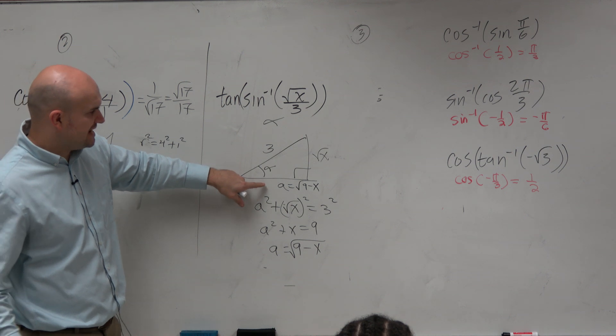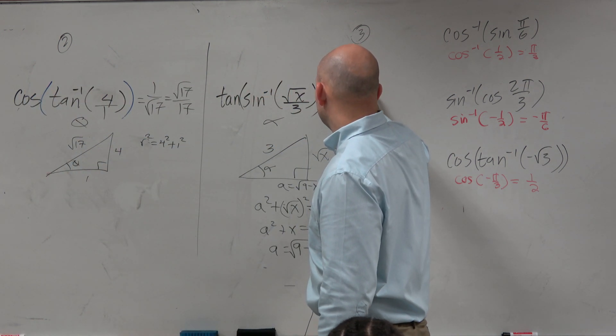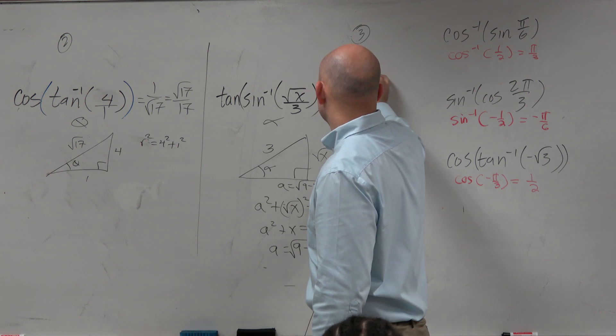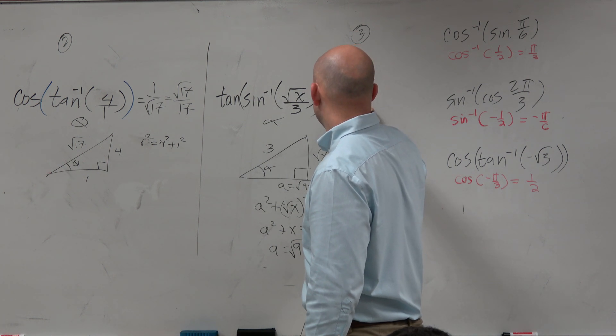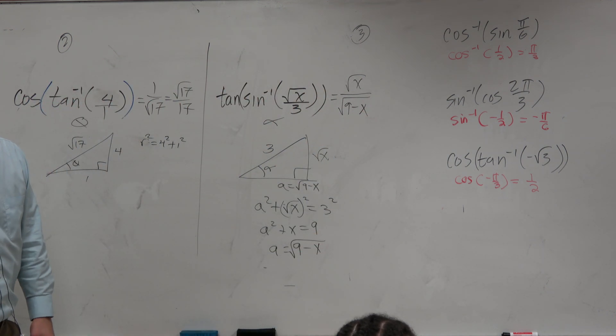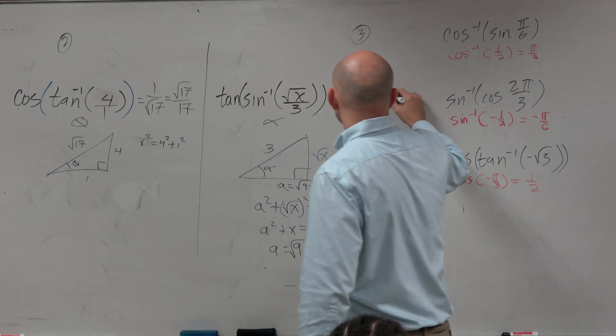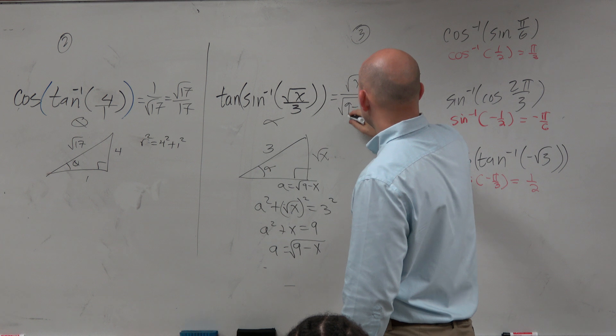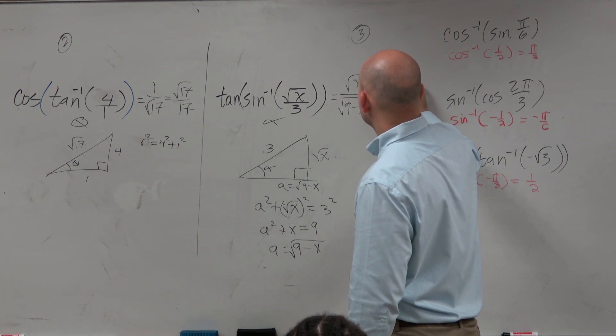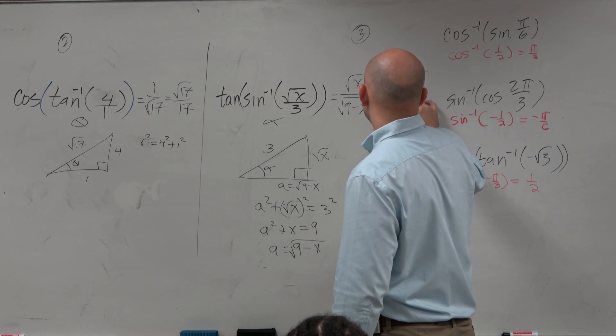And if I wanted to represent this as a tangent, I could re-represent this as the square root of X over the square root of 9 minus X. If I wanted to rationalize this to have it simplified, if you multiply by the radical on the top and bottom, you'd have 9X minus X squared over 9 minus X.